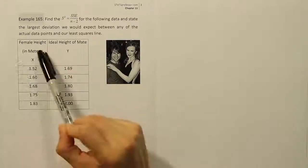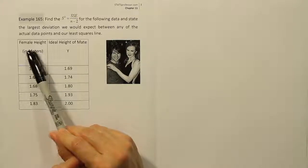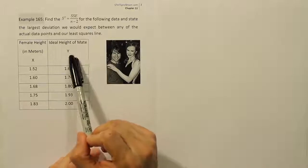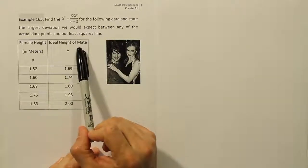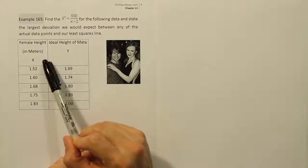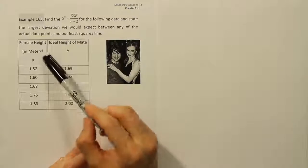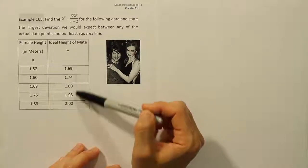So we're given some numbers here. It's the female height in meters in the X column, and then we have the ideal height of their mates. In other words, these females are commenting on what they believe the ideal height of their mate would be. We're trying to see if there's a connection between the two, if we can create a model that will try to predict based on the female's height what she'll think her ideal mate's height is.